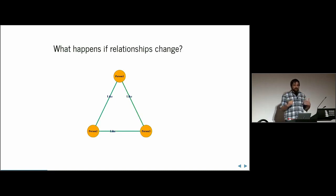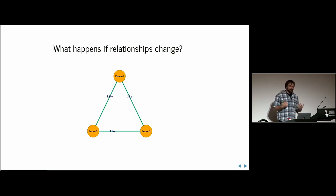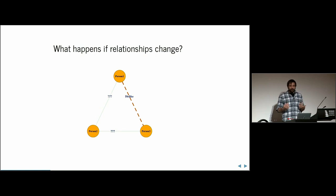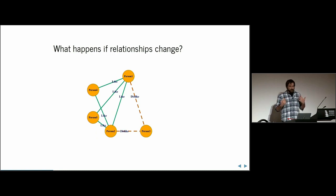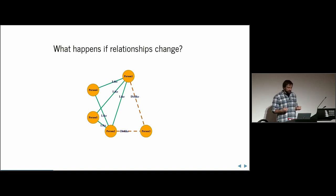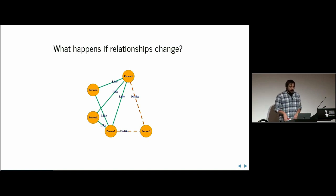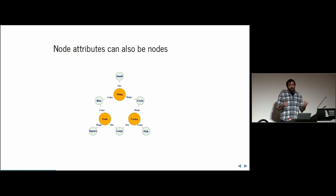Once we understand the relationships of a network — not just the dyadic relationship but the relationship of the whole — we can start predicting things. For example, in a group of people that like each other, if two of them stop liking each other, we can infer outcomes. If person one and person two share a friend group but person three does not, there's a strong chance person two will no longer be friends with person three, following the same logic as 'the enemy of my enemy is my friend.'